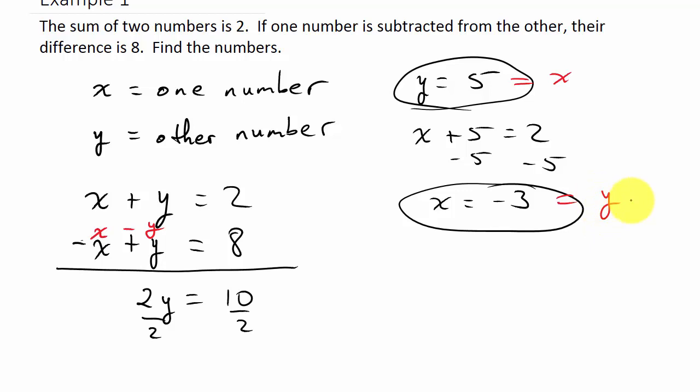Okay, that's the only difference it would have made, but you would have gotten the correct numbers. I mean, look, if you have x plus y equals two, and x minus y equals eight, look, two x equals ten. See, instead of two y equals ten, you got two x equals ten, so it's the same thing.